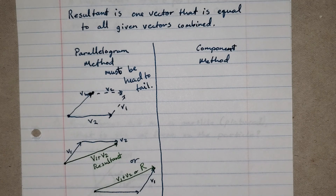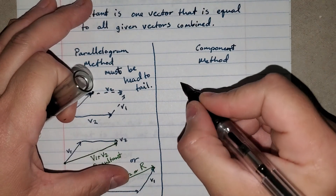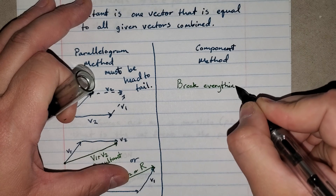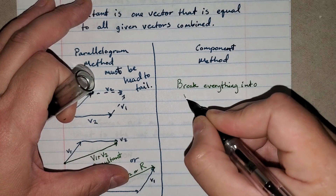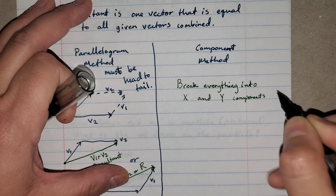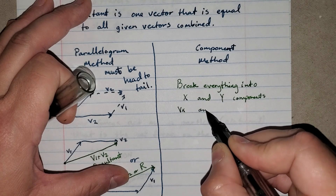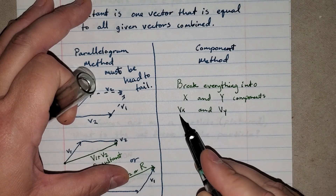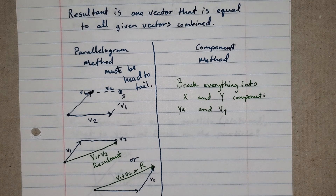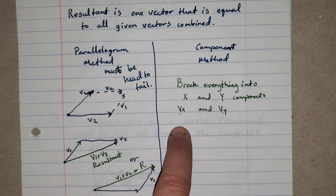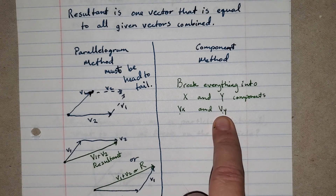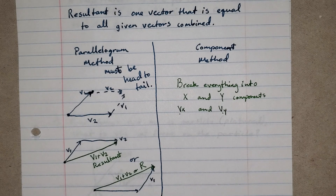The way the component method works is we break everything into x and y components, typically called Vx and Vy — the x component and y component of the vector. All of the x components are horizontal, so you can add them together. All of the y components are vertical, so you can add them together. I actually make a table to do it.